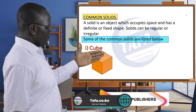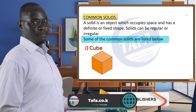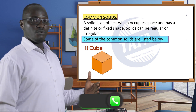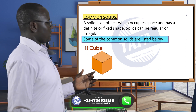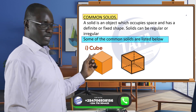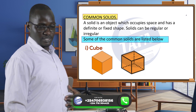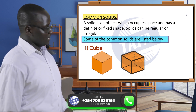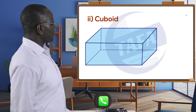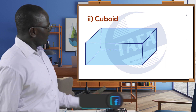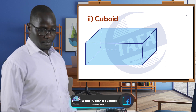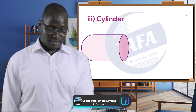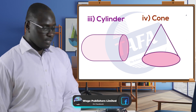Those hidden lines are shown by broken lines, as you can see in this diagram here. The second solid is the cuboid — again, the hidden lines are broken. There is also a cylinder and a cone.